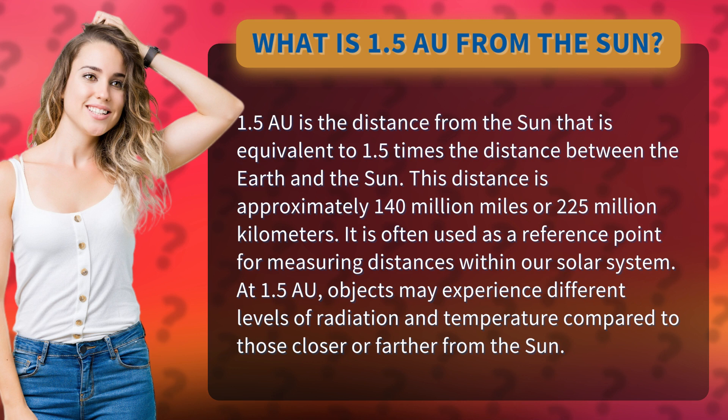At 1.5 astronomical units, objects may experience different levels of radiation and temperature compared to those closer or farther from the sun.